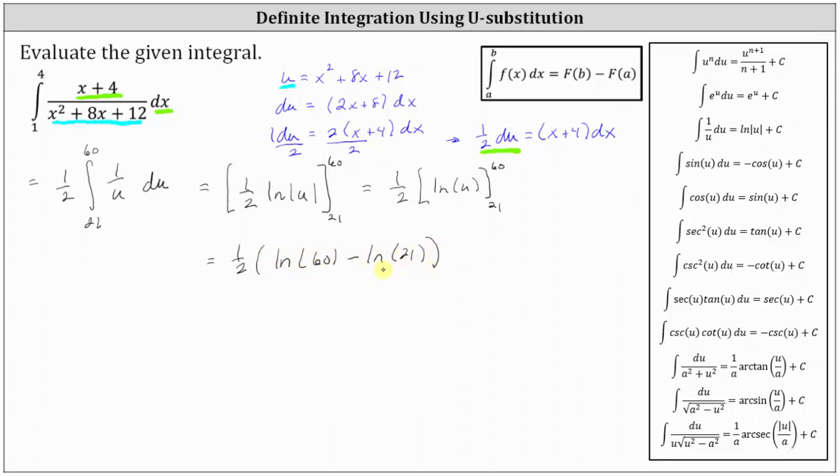Using the property of logarithms, we can combine these two logs. This is equal to 1 half times natural log of 60 divided by 21, which to four decimal places is approximately 0.5249.